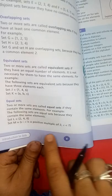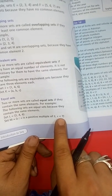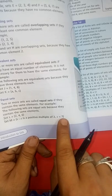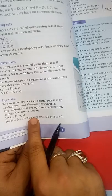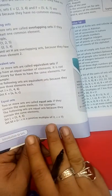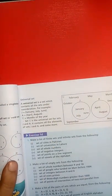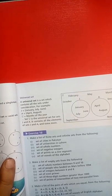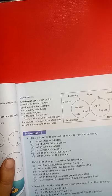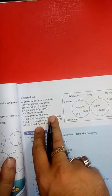Equal sets have the same elements and the same nature, like {2, 4, 6} and {2, 4, 6}. Both have three elements and the same nature, so they are equal sets. Let me tell you about the universal set.